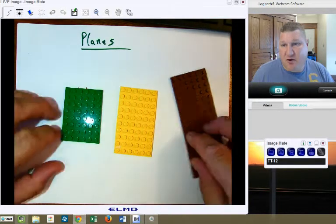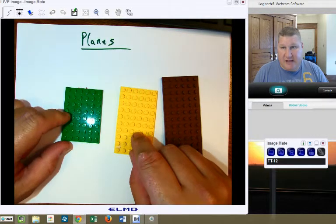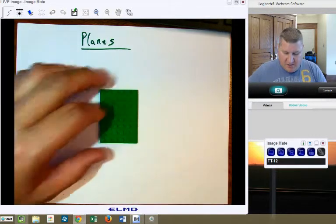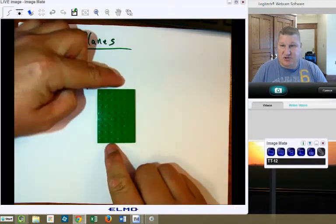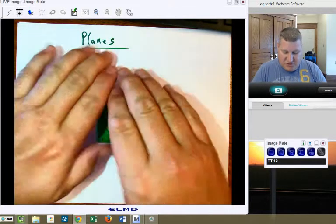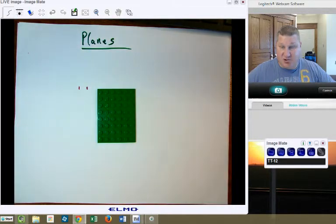Now, there's a little bit of a problem with using Legos to represent planes. Technically, remember a plane goes on in each direction forever and ever and ever. So, this would be like an infinitely large Lego mat.